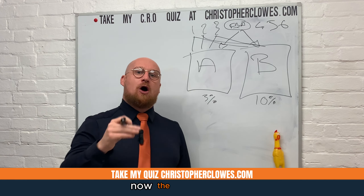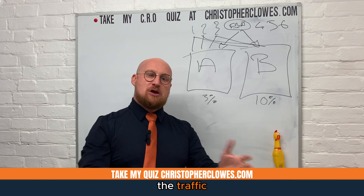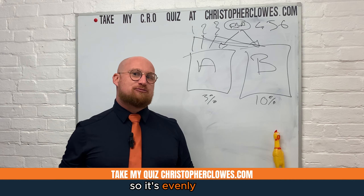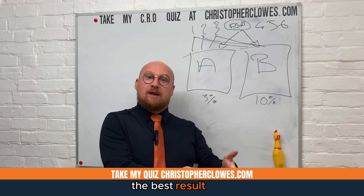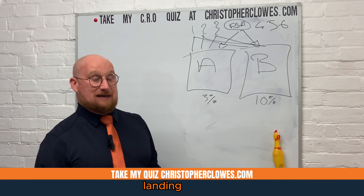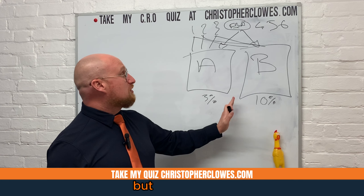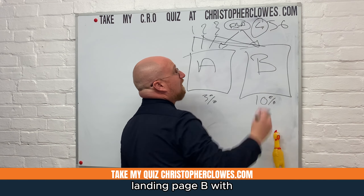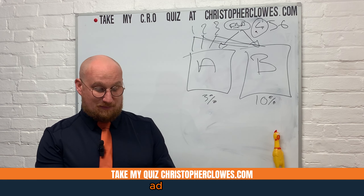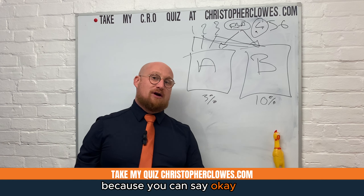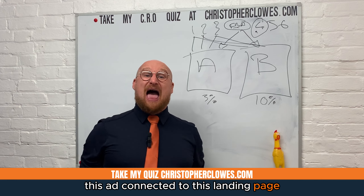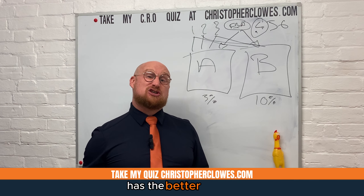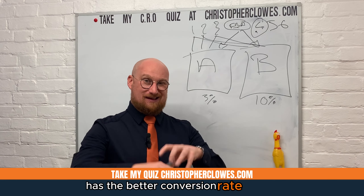With AI software, you can load all of this into one platform and it directs the traffic so it's evenly spread. You're testing accordingly, and at the end of the test it shows you the best result. You can match landing page B with ad number four, because that specific ad connected to that landing page has the better conversion rate in total.